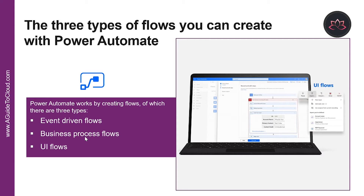Business process flows are built to augment the experience when using model-driven apps and the Common Data Service. Use these to create a guided experience in your model-driven apps. UI flows are robotic process automation flows that allow you to record yourself performing actions on your desktop or within a web browser. You can then trigger a flow to perform these processes for you, passing data in or getting data out, letting you automate even manual business processes.